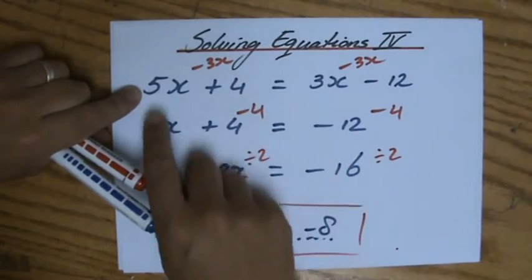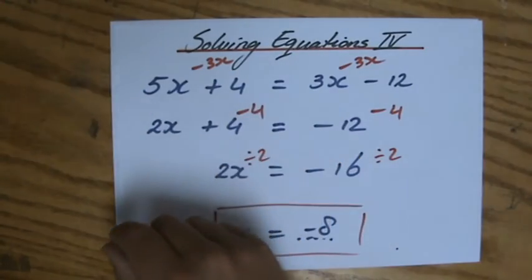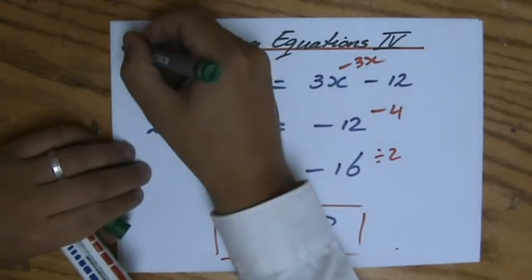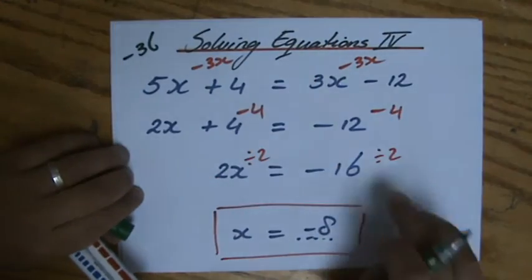Let's look at the left side. 5 times minus 8, minus 40, plus 4, minus 36. I'm just going to write that down. Minus 36 is the left side. What about the right side of the equation?